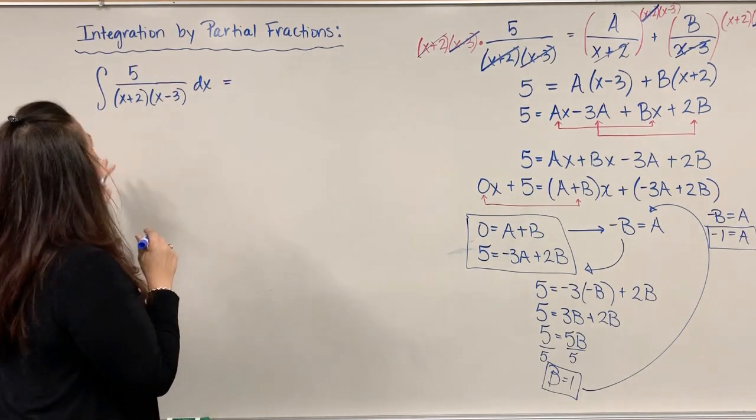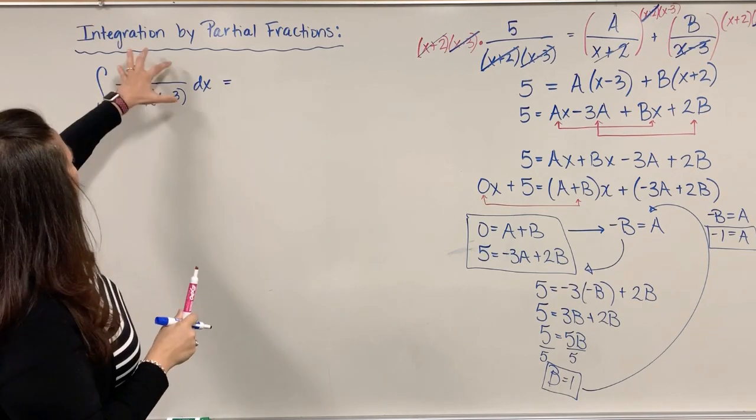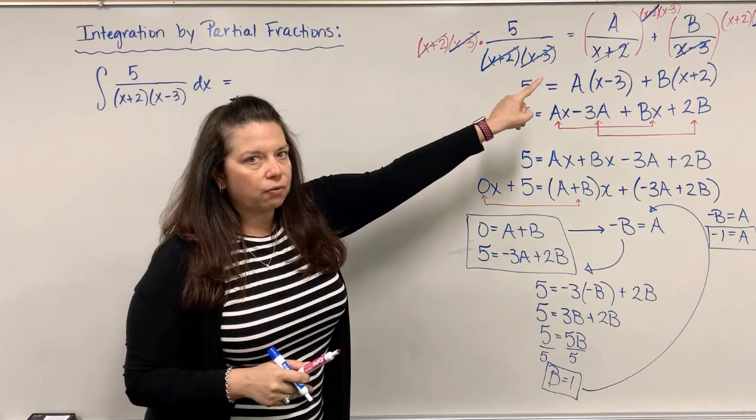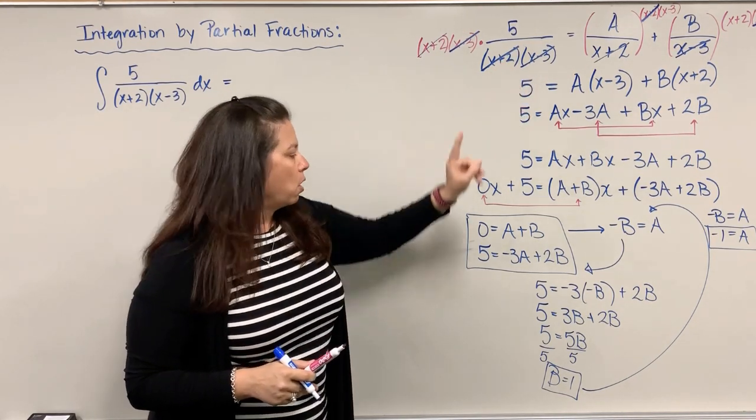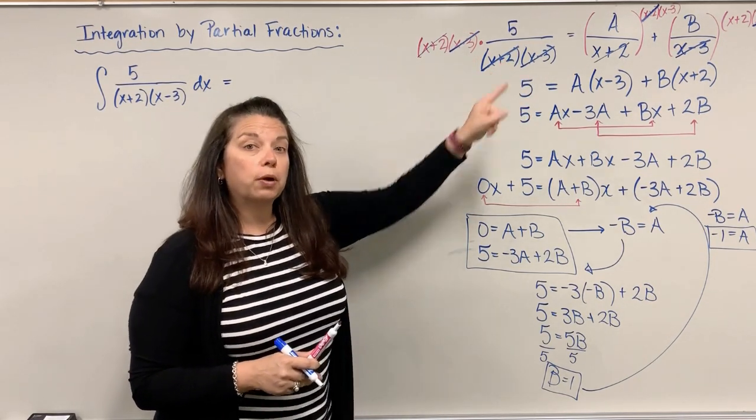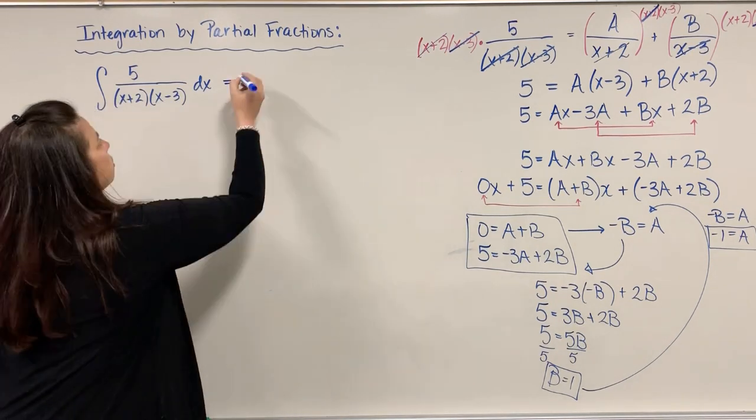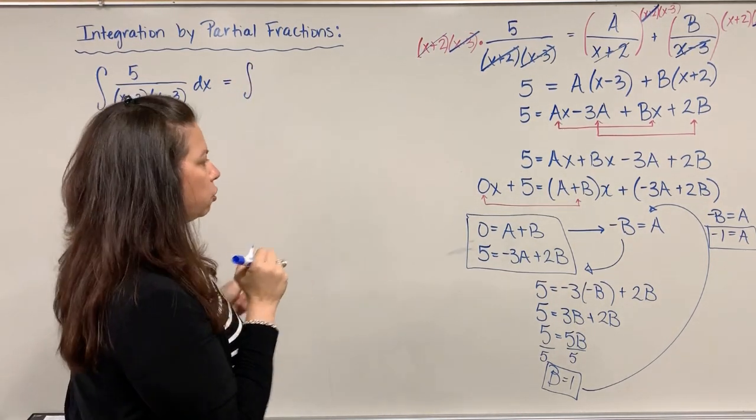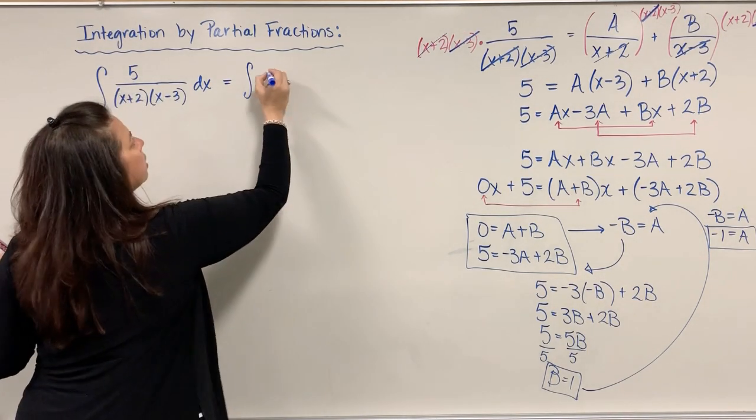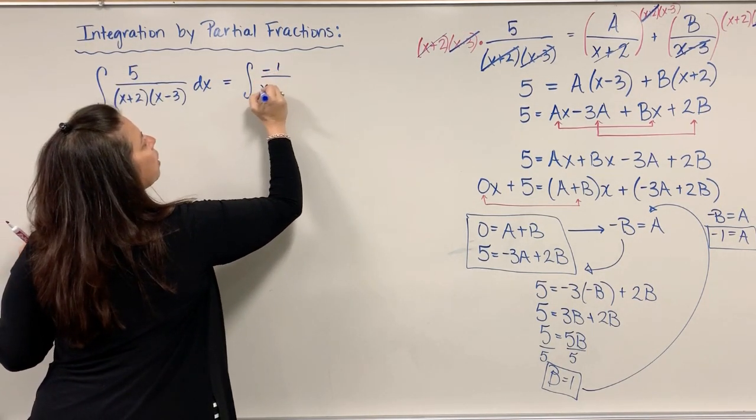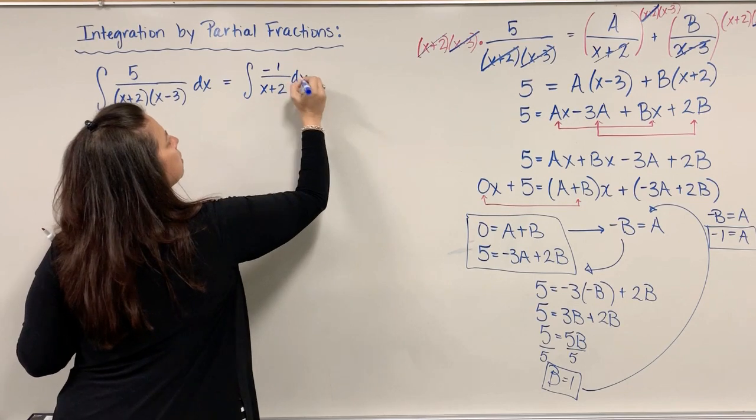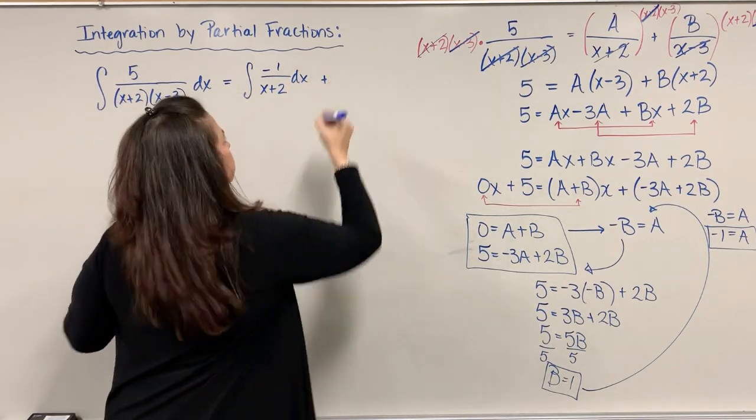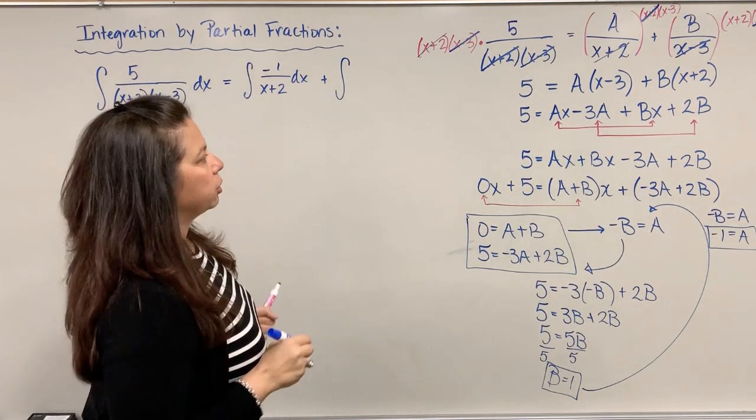Recall way back when our whole mission is to integrate this fraction. What we've done with all this algebra is come up with an equivalent integrand. Let me come back and replace, instead of having 5 divided by (x+2)(x-3), let's replace that one fraction with our two fractions with the appropriate new numerators.